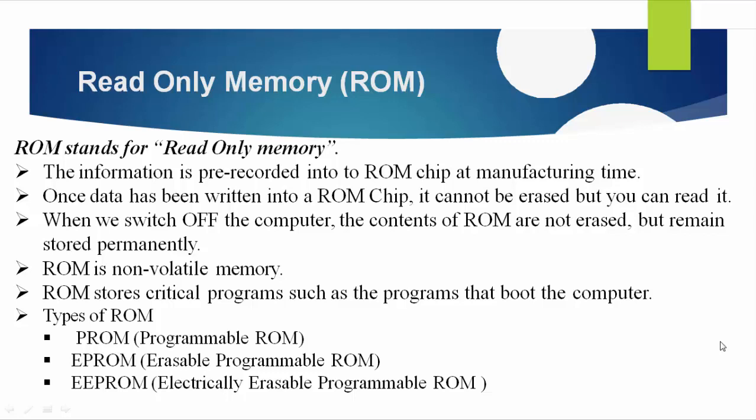Once the data is stored in ROM, it cannot be erased but remains stored permanently. ROM is non-volatile memory, whereas RAM is volatile memory. So ROM is non-volatile memory — the data remains even when the power is off.